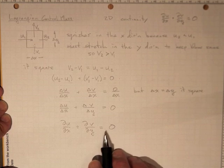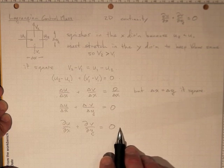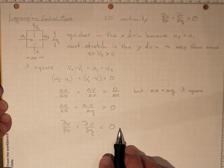Or in three dimensions we also add a di w di z term. So we get the same answer with a Lagrangian control mass as we did with an Eulerian control volume.